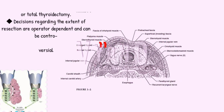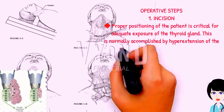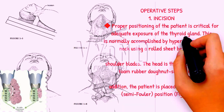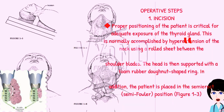Decisions regarding the extent of resection are operator dependent and can be controversial. Operative Step 1: Incision. Proper positioning of the patient is critical for adequate exposure of the thyroid gland. This is normally accomplished by hyperextension of the neck using a rolled sheet between the shoulder blades. The head is then supported with a foam rubber donut-shaped ring.